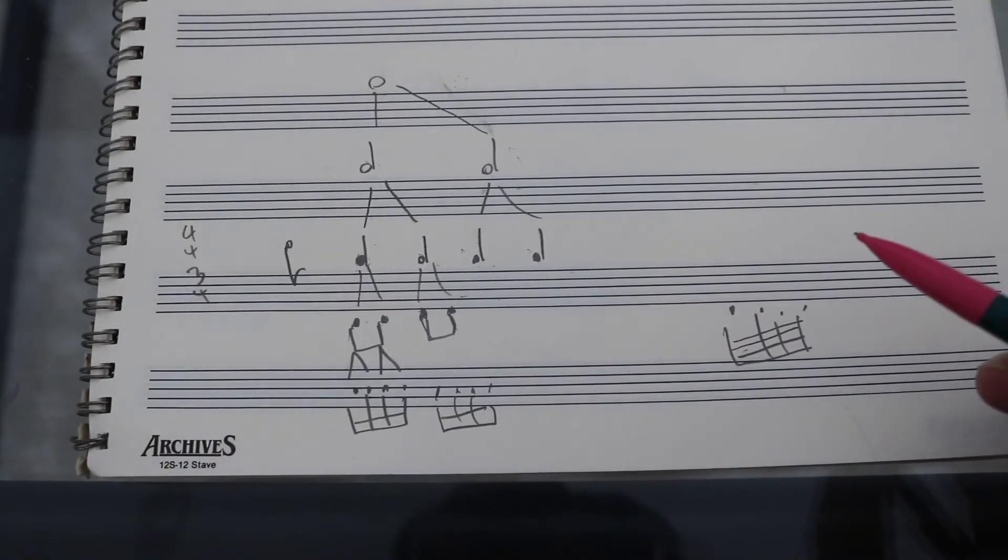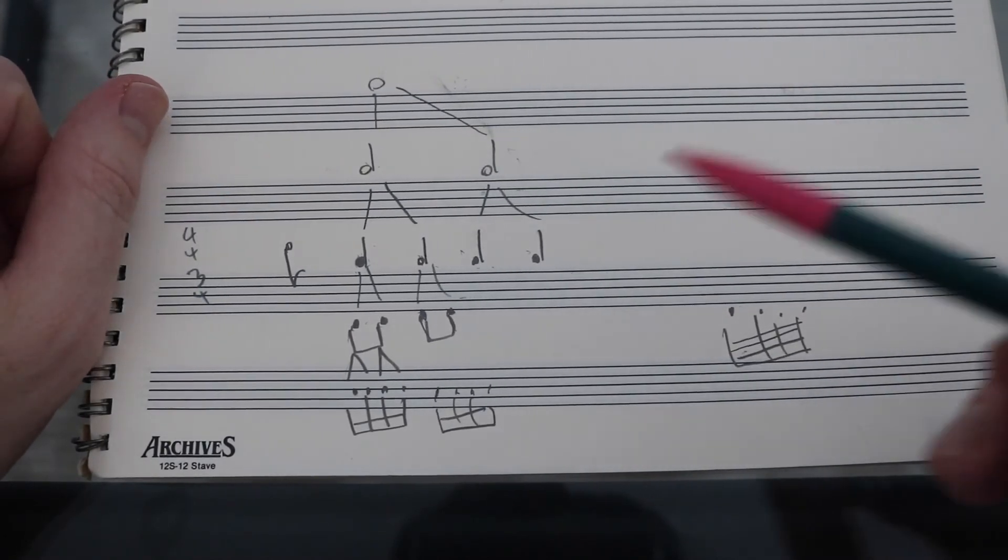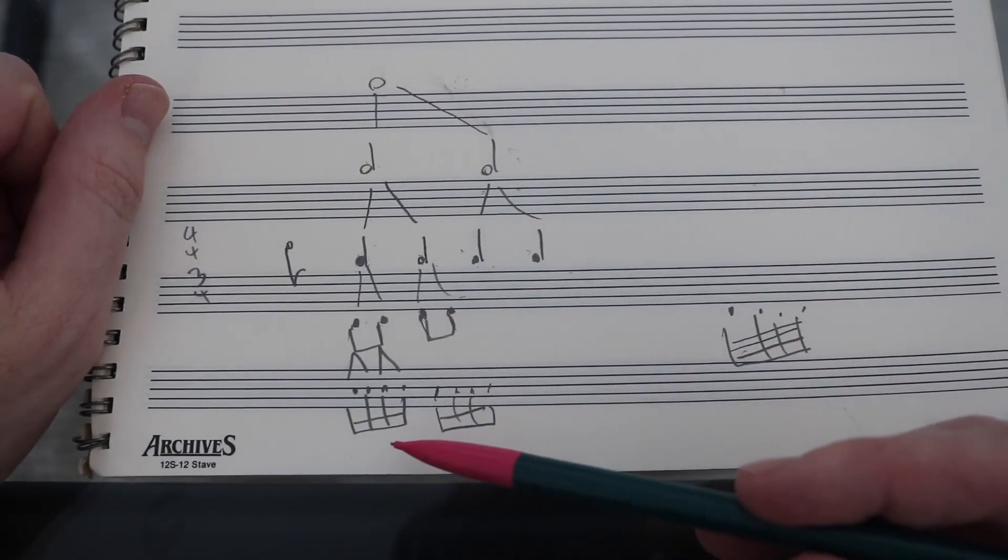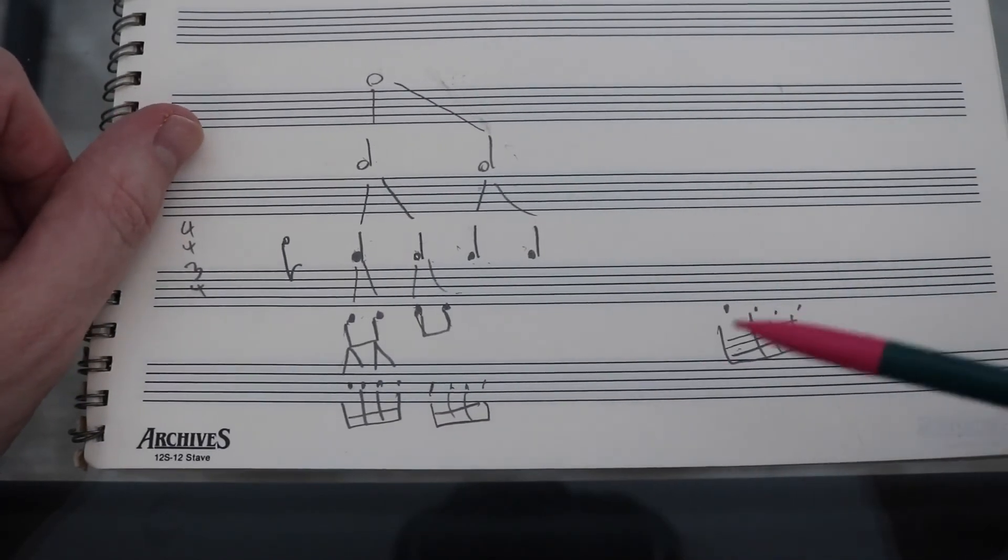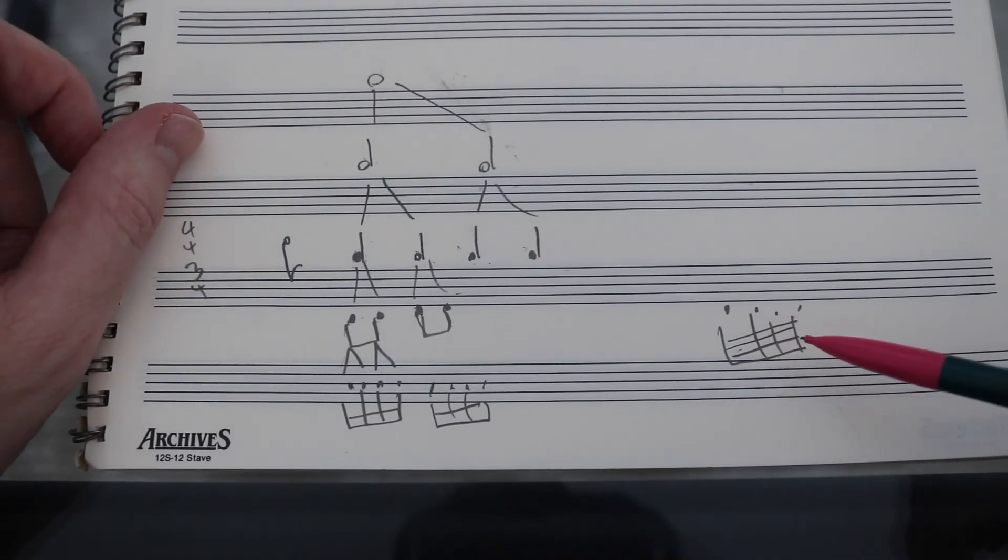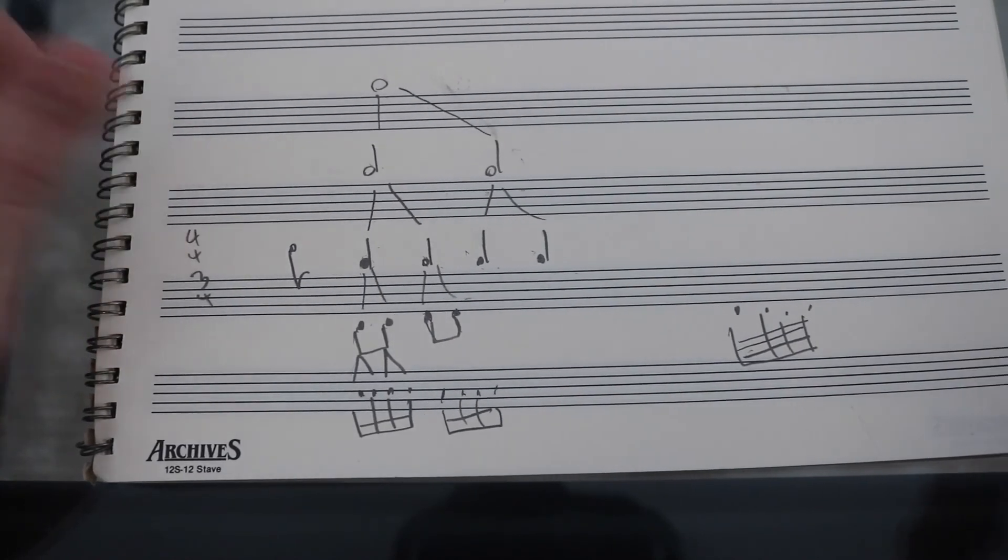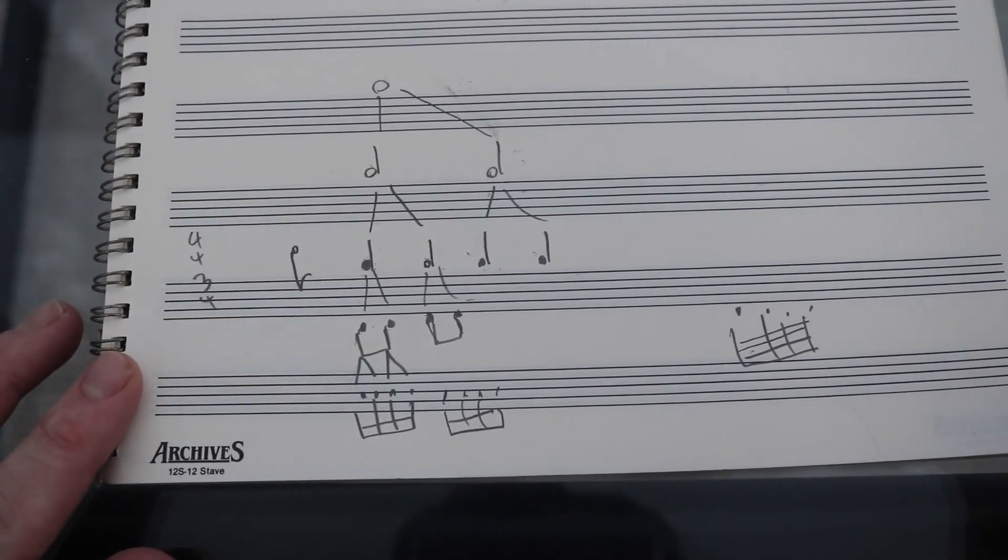Theoretically, you could keep going on for a long time. But realistically, we don't see smaller than sixteenth notes too often, and when we do, it very, very rarely would go past the 64th note. That's getting into a very, very small division of a beat, what we would usually see.